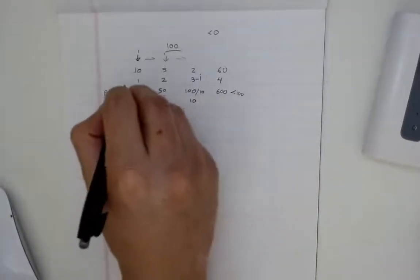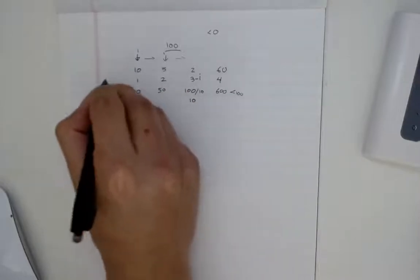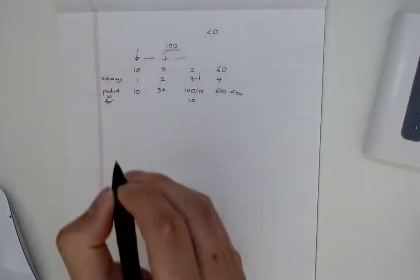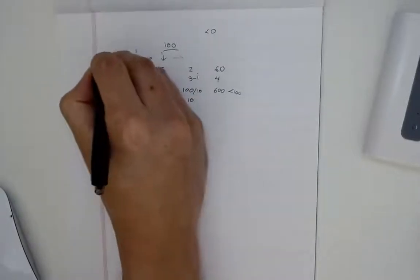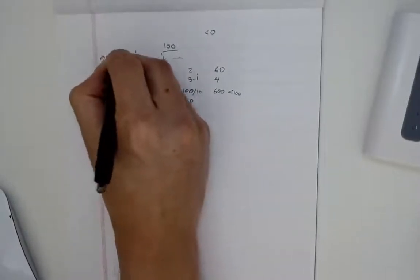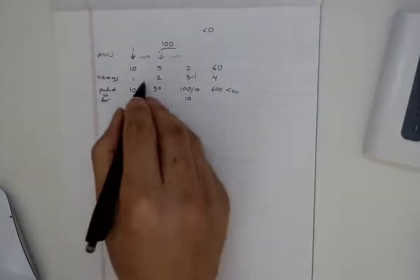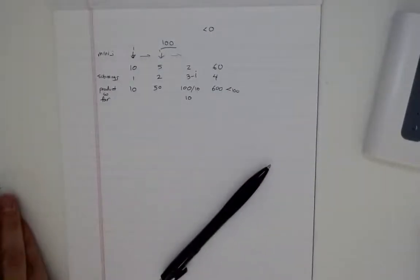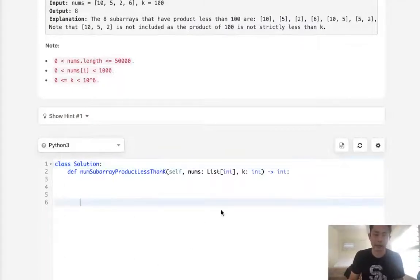So basically, we need to keep track of total subarrays at each number, the product so far, our pointer for the minimum i, and just move through our entire array to figure out our total. Hopefully, that gave you a decent intuition of how we might go about doing this. Let's start coding it out.